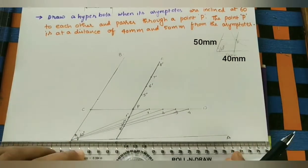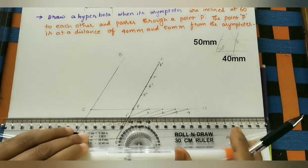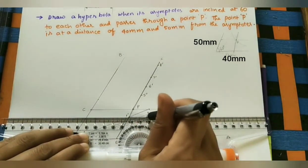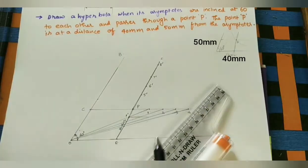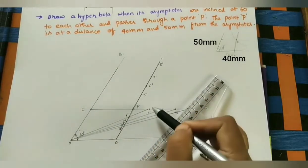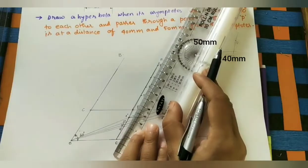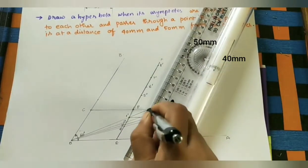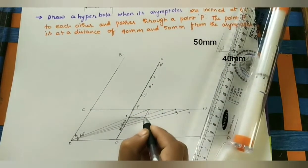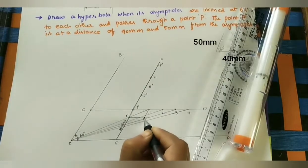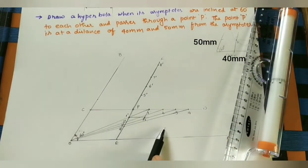At 1' draw a parallel line, and at 1 draw a line parallel to this asymptote. We get the intersection point, which is P1. P1 is one of the points on the hyperbola.